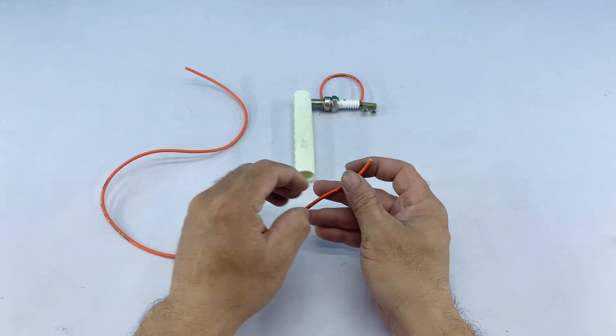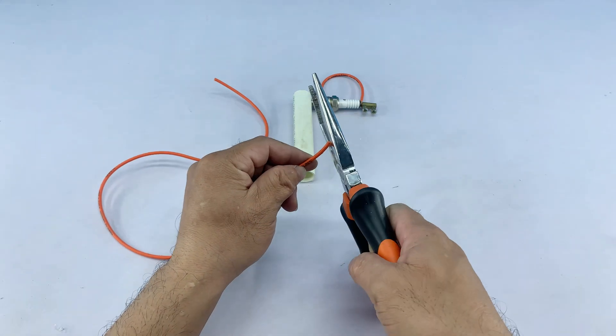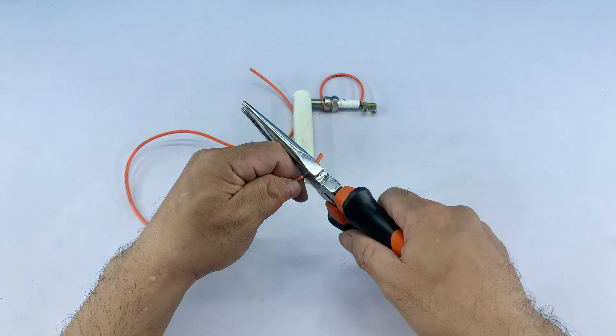Next, I'm preparing another wire, stripping the end with my pliers. This wire will provide the power to our soldering tool.